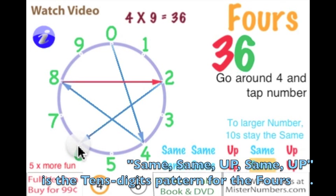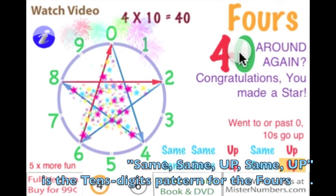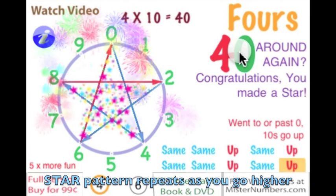Go over to 2, again that's red, to 6, and this line will be red because we've actually gone to 40. The 10s digit goes up. The same, same up, same up on the side shows you that.